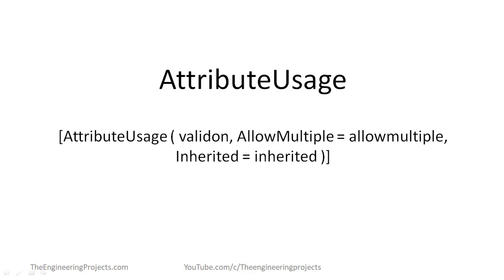AttributeUsage specifies the types of items to which the attribute can apply. Here is the syntax with three parameters: ValidOn, AllowMultiple, and Inherited, which are used whenever AttributeUsage is called. The parameter ValidOn specifies the language elements on which the attribute can be placed. It is a combination of values of the enumerator AttributeTargets. The default value is AttributeTargets.All.